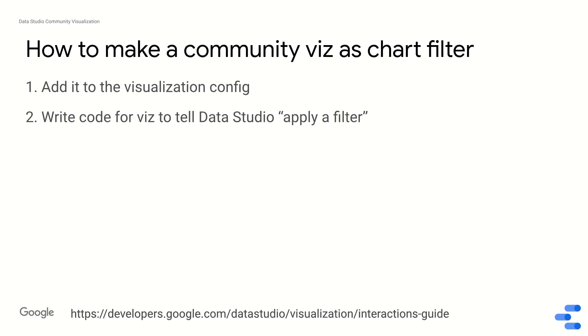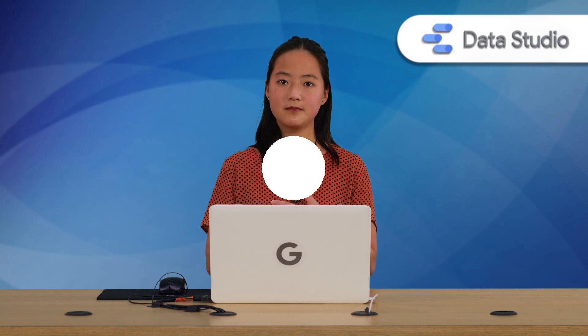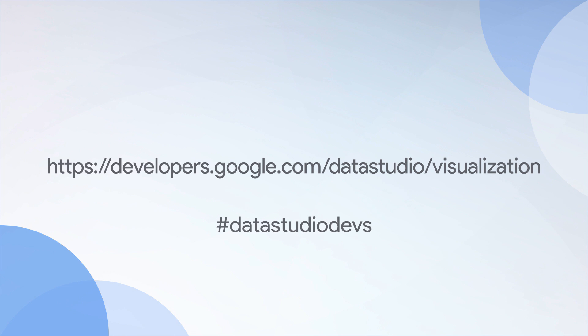In summary, there are two things you need to do to configure your community visualization to work as a chart filter. One, add interactions to your visualization config. Two, write code to tell Data Studio to apply a filter and provide the parameters with which to do so. To learn more, review the library reference and interactions guide on our developer documentation at developers.google.com/datastudio/visualization, and share on social media using the hashtag datastudiodevs or submit to our showcase.